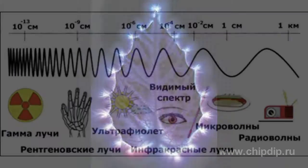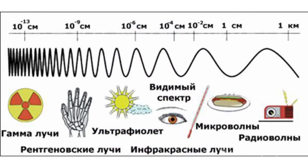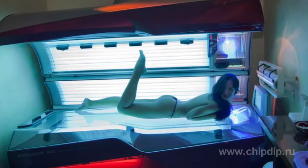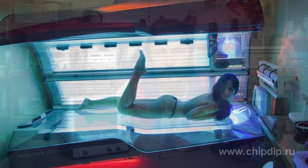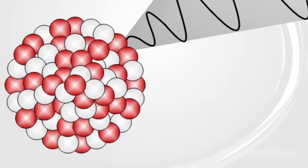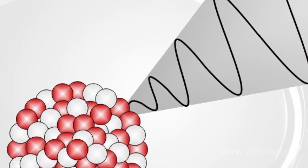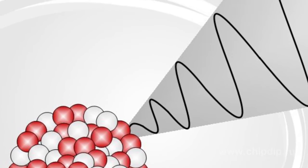UV radiation has a bactericidal action and positive effects on the human organism in case of short doses — such as when we get tanned — but in case of large doses it leads to negative biological impact, including changes at the cellular level, changes in metabolism, and negative effects on the eyes.